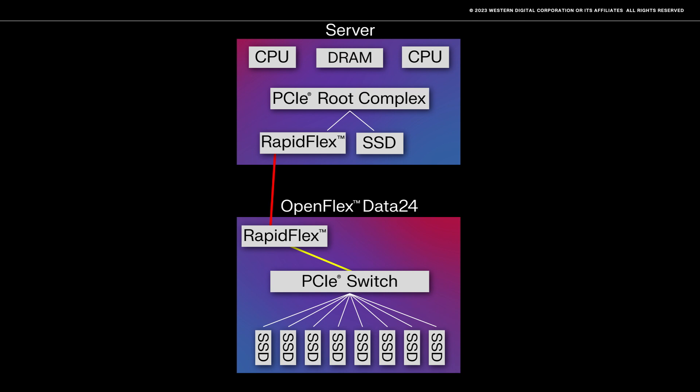In the server, the C2000 is an initiator mode fabric bridge device. It is discovered by the server's root complex at boot time. It translates NVMe to Ethernet for the attached OpenFlex Data24.